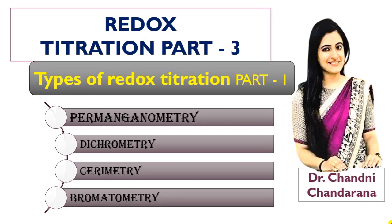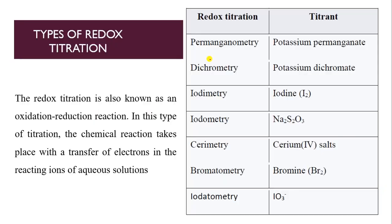Hello dear learners, today we will discuss the types of redox titration — some methods like permanganometry, dichromatometry, cerimetry, and brometometry in this part 1. The rest of the methods we will discuss in part 2. First of all, what is redox titration and what are the types of redox titration?